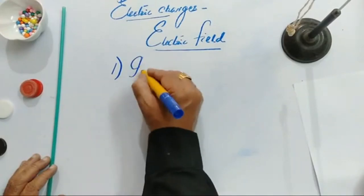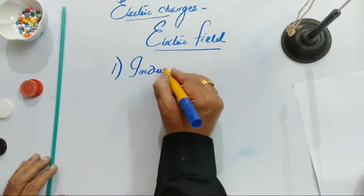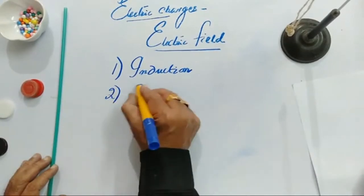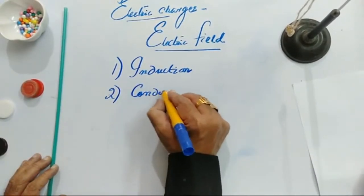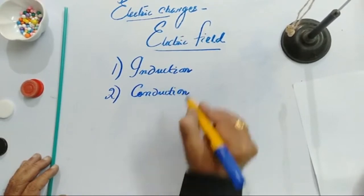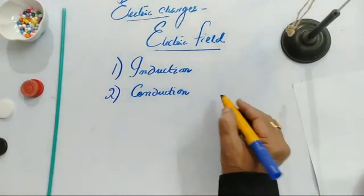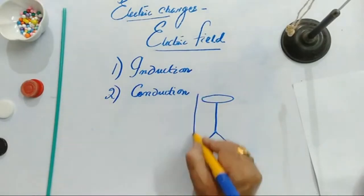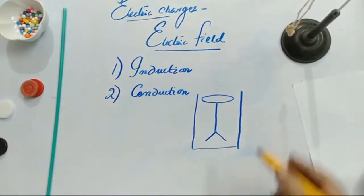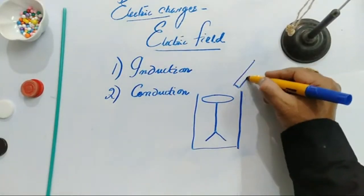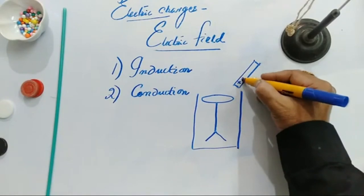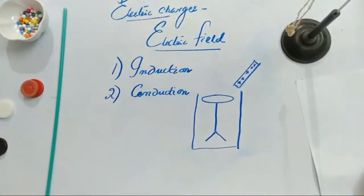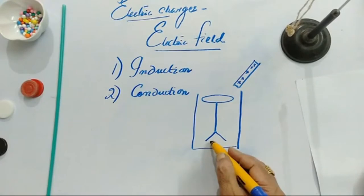There are two methods of charging: one is charge by induction, and the other is charge by conduction. What is the basic difference? Suppose, as I have shown, this gold leaf electroscope — if I keep one positively charged rod here, you see that there is some space between these two, yet divergence will still be seen.